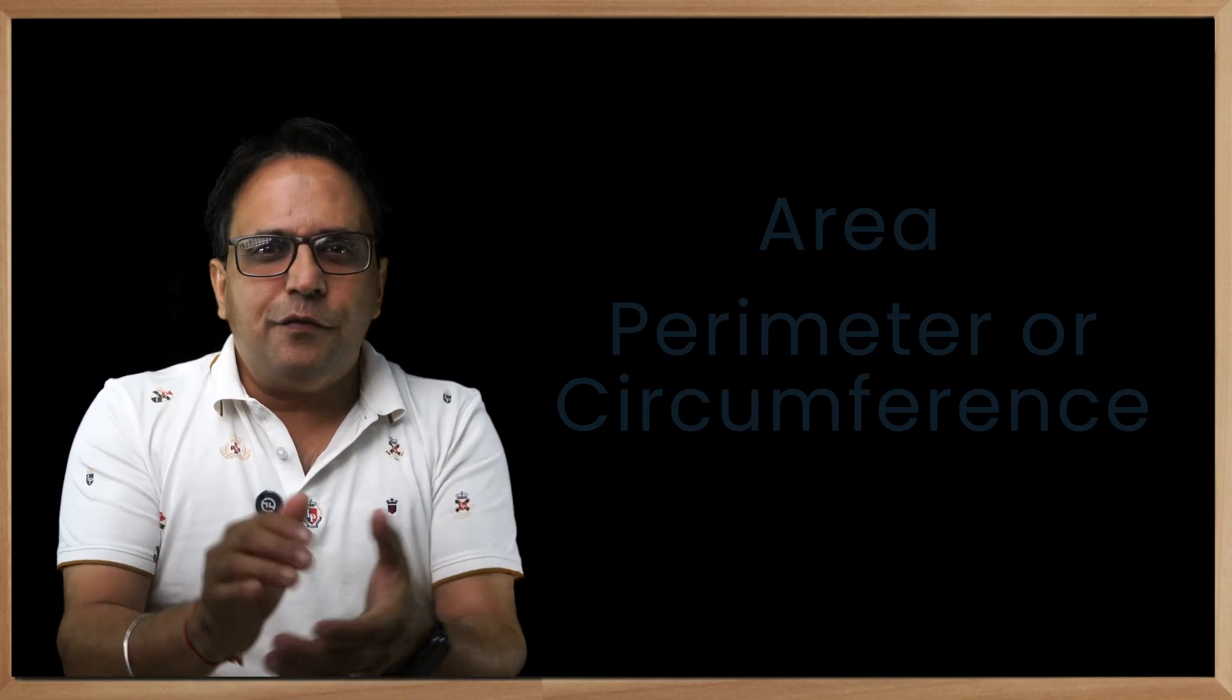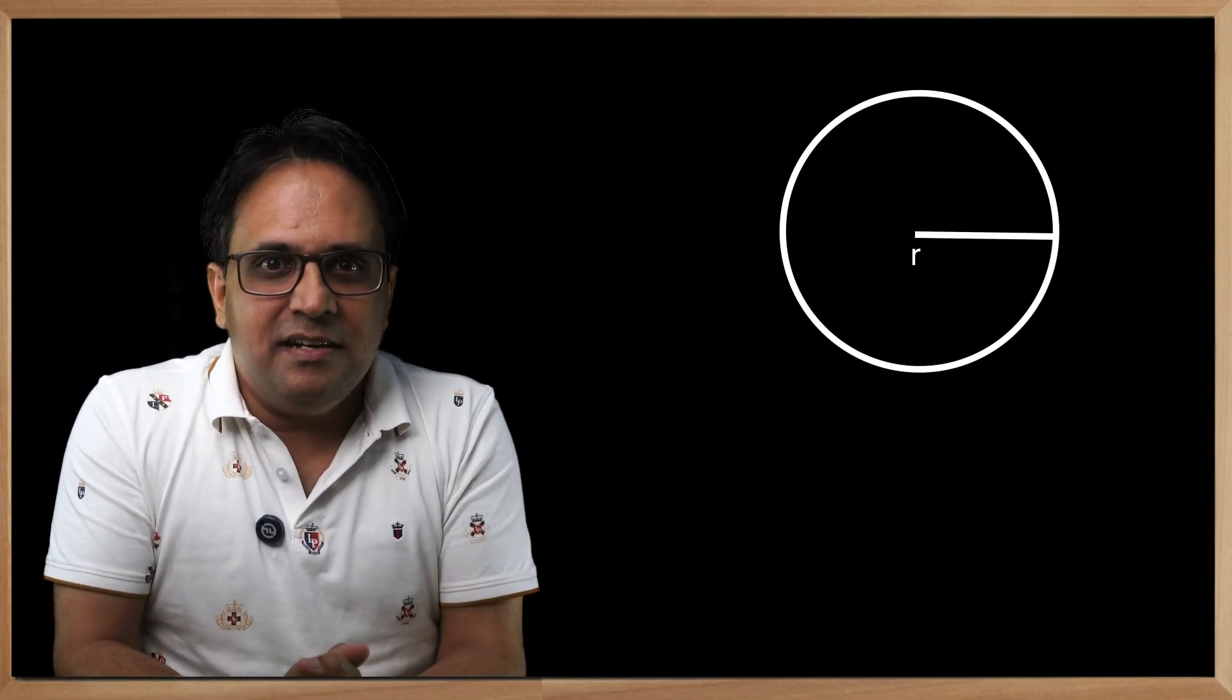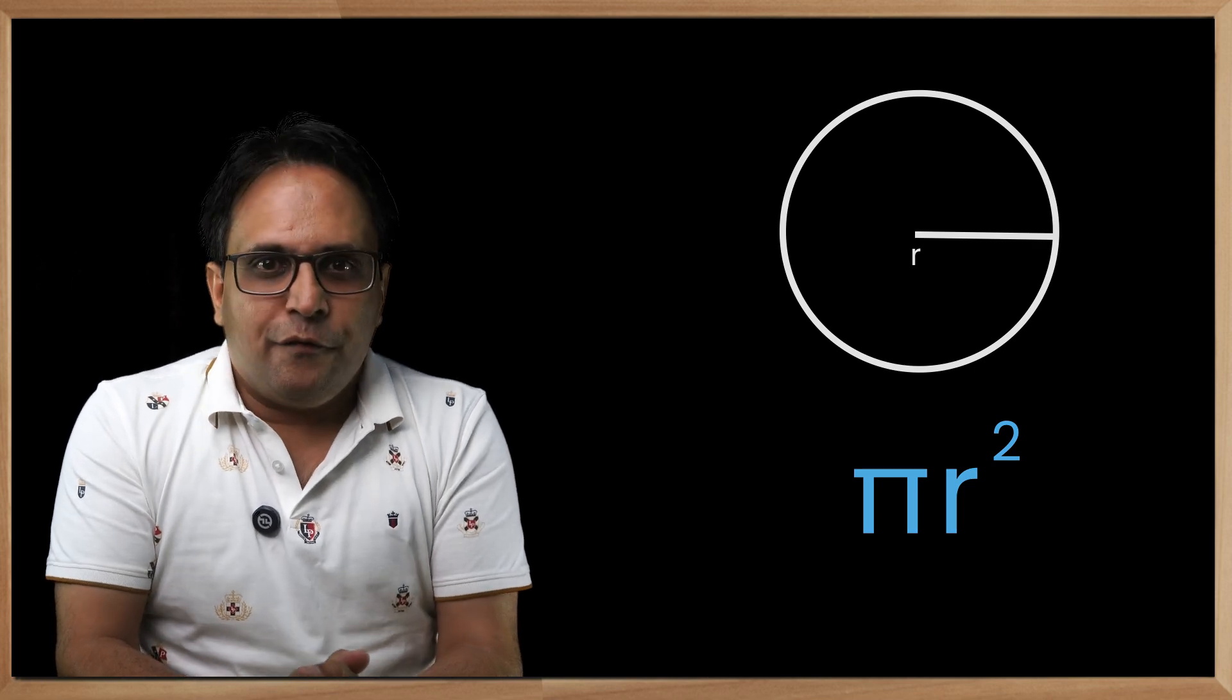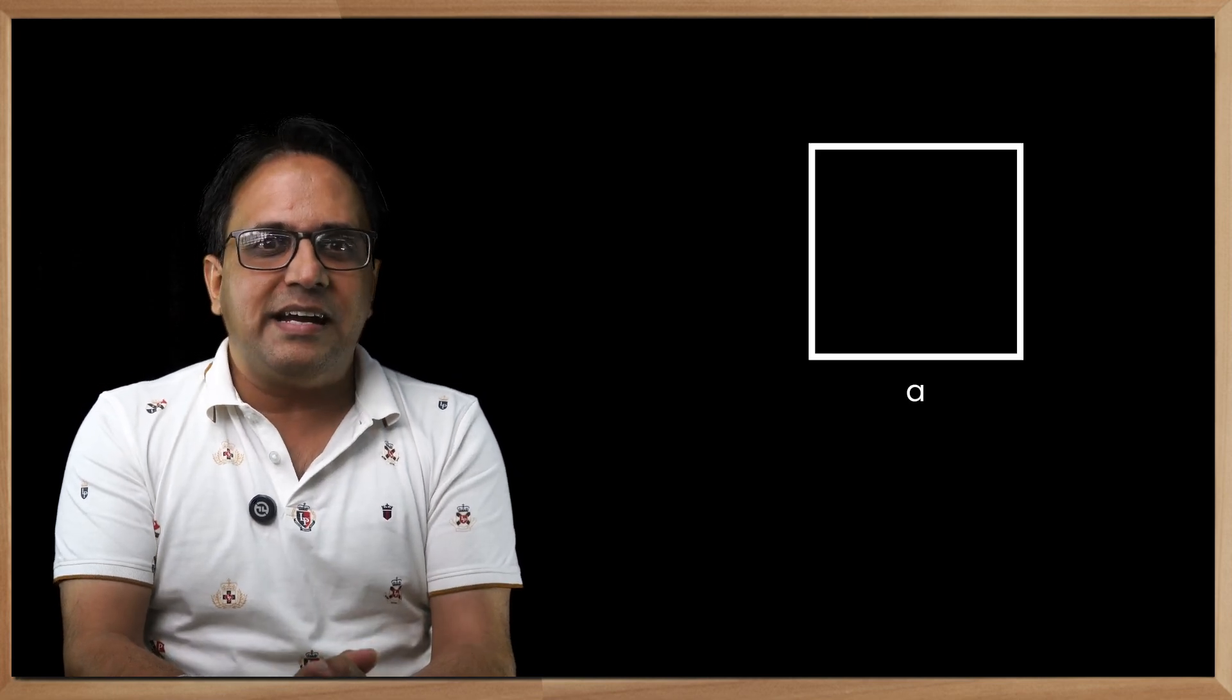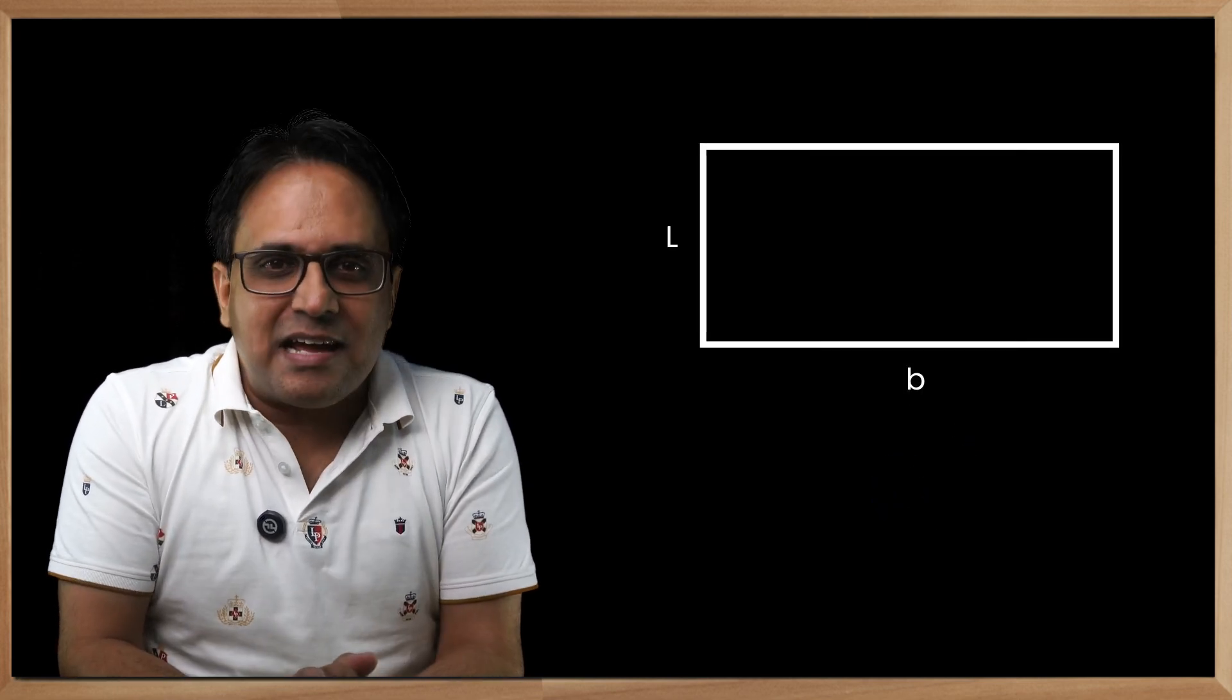Area of 2D objects such as a circle is πr². For a square it is a², and for a rectangle it is length multiplied by breadth.